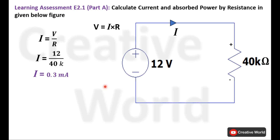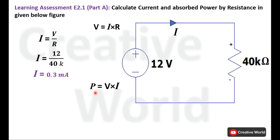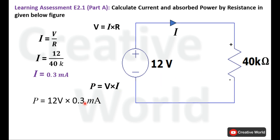Now we have calculated the current through this resistance, and the voltage across this resistance is 12 volts. So we can calculate the power of this resistance using the power formula, which is the product of voltage and current. We know the values of voltage and current, so we enter them into the equation.